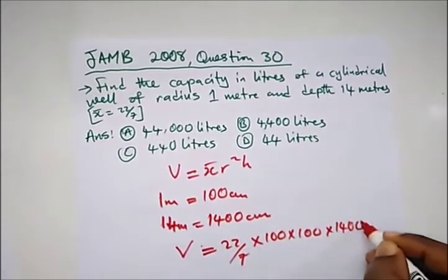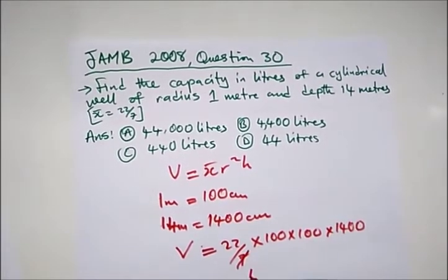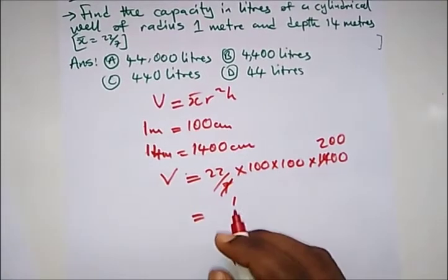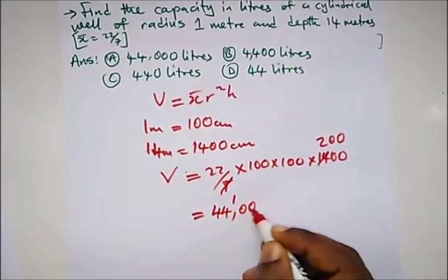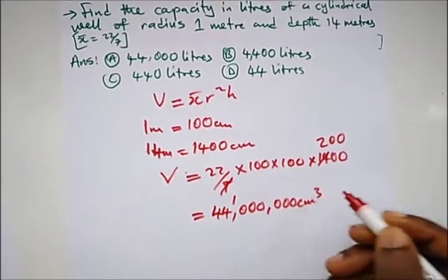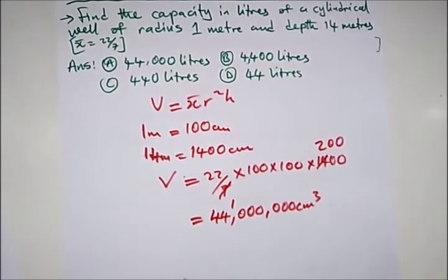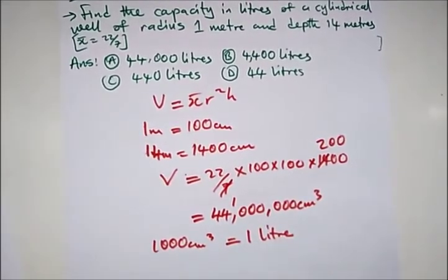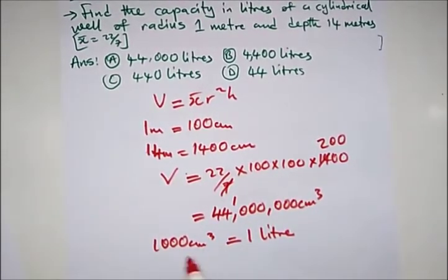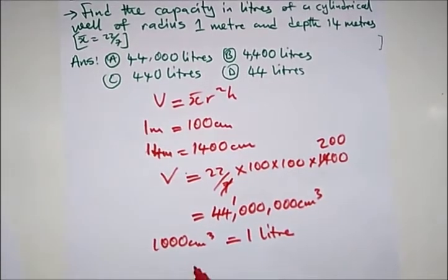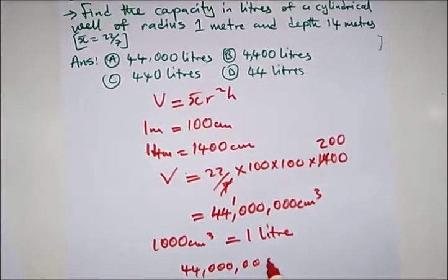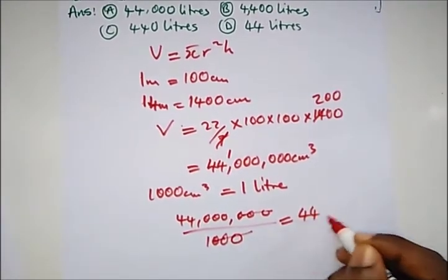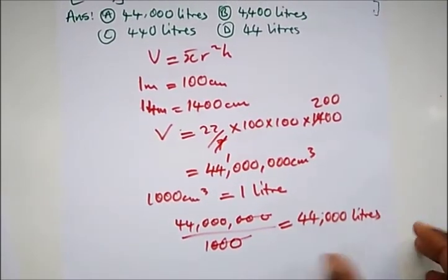So the volume is 22 over 7 times 100 times 100 (that's r squared) times 400 centimeters. When we multiply through we get 44,000,000 centimeter cubed. To convert centimeter cube to liters: 1000 centimeter cube equals 1 liter. So we divide 44,000,000 by 1000, which gives us 44,000 liters. Our correct option is option A.